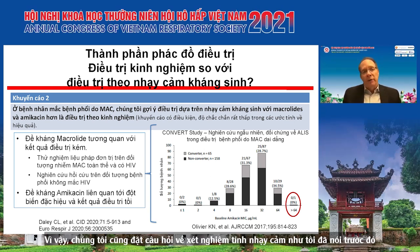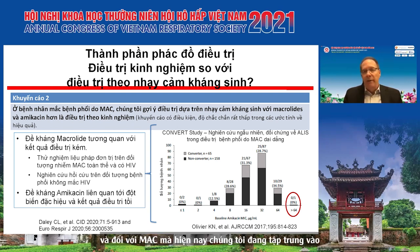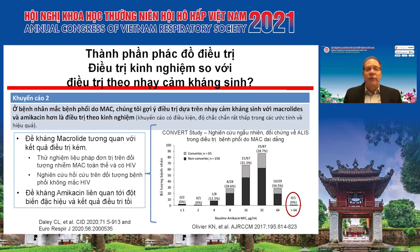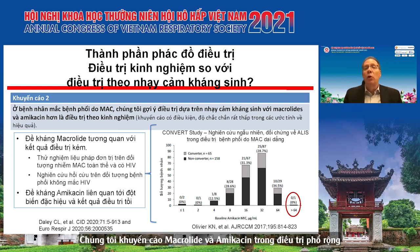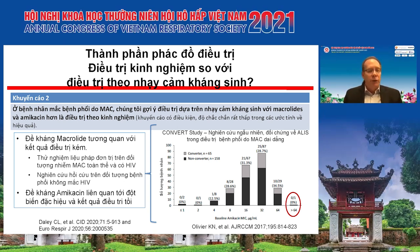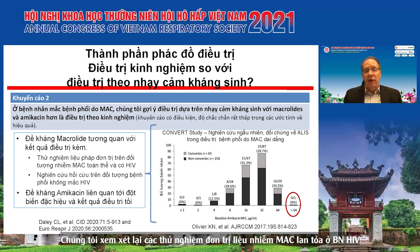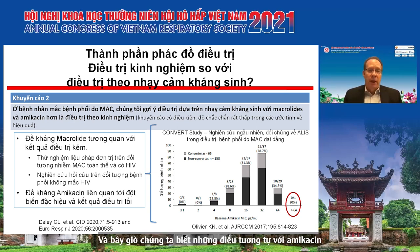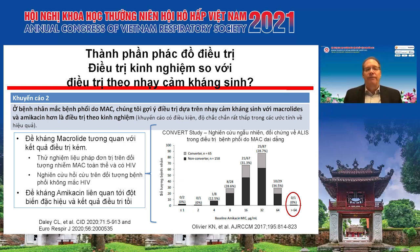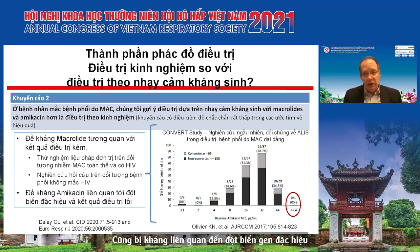For MAC susceptibility testing, we recommend testing macrolides and amikacin rather than using empiric treatment. This is based on decades of cohort studies showing that macrolide resistance correlates with poor treatment outcomes — established going back to HIV monotherapy trials in disseminated MAC and confirmed in retrospective studies in pulmonary disease. Similarly, amikacin resistance is associated with a specific mutation and worse treatment outcomes.